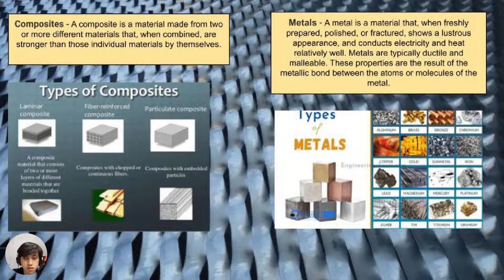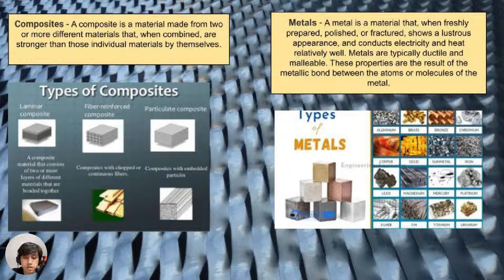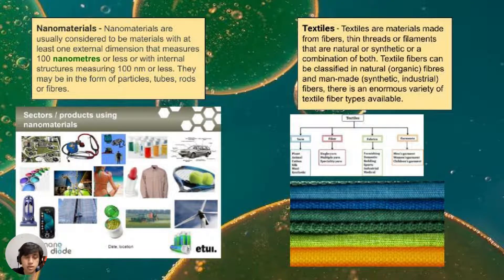Next are composites, which are made of two or more different materials. Then metals, which are widely prepared materials because of their toughness and electrical conducting properties. Next are nanomaterials.